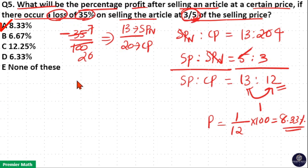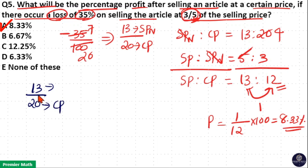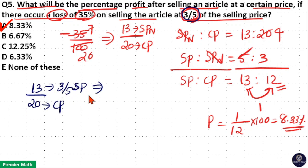In the second method, from the loss condition the ratio is 13/20, where 13 is the selling price and 20 is the cost price. This 13 is the selling price which is 3/5 of the original selling price. So write it as: 3/5 of SP equals 13, which means SP equals 5 × 13/3, that is 65/3 units.